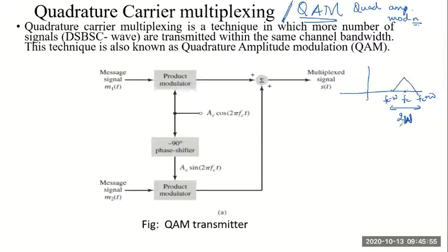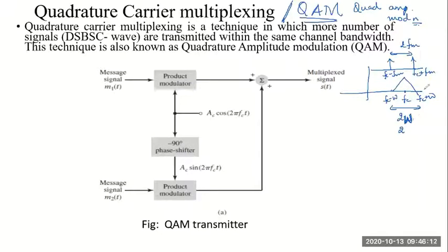For a single tone DSBSC signal, the components would be FC plus FM and FC minus FM. So the bandwidth would be 2 times FM, or 2 times W, where W is the highest frequency component. The bandwidth of DSBSC is 2W.